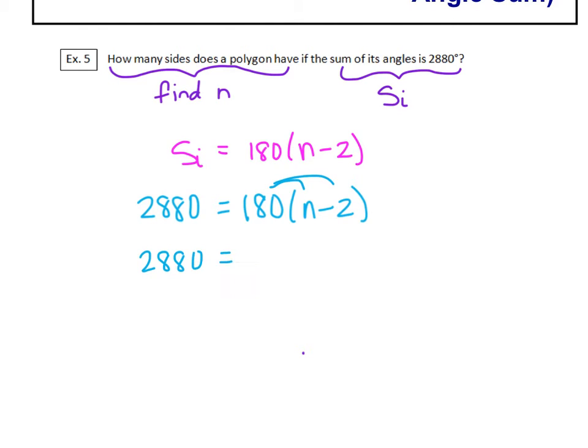So you have 2,880 is equal to 180n minus 360. And now we're just going to solve the equation for n. So we will add 360 to both sides.